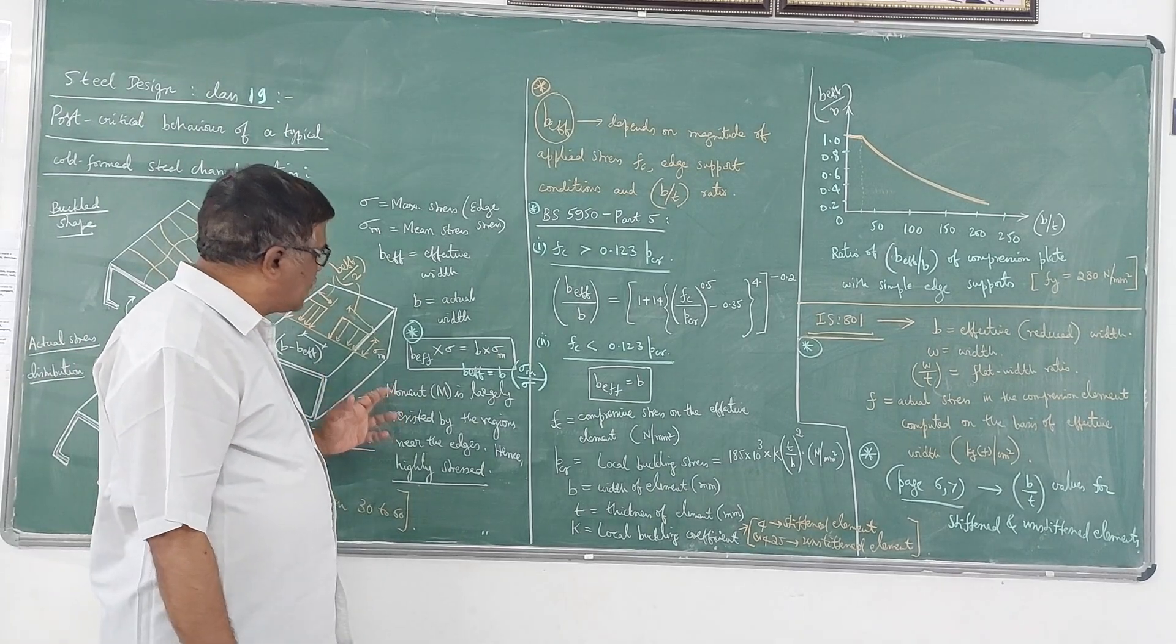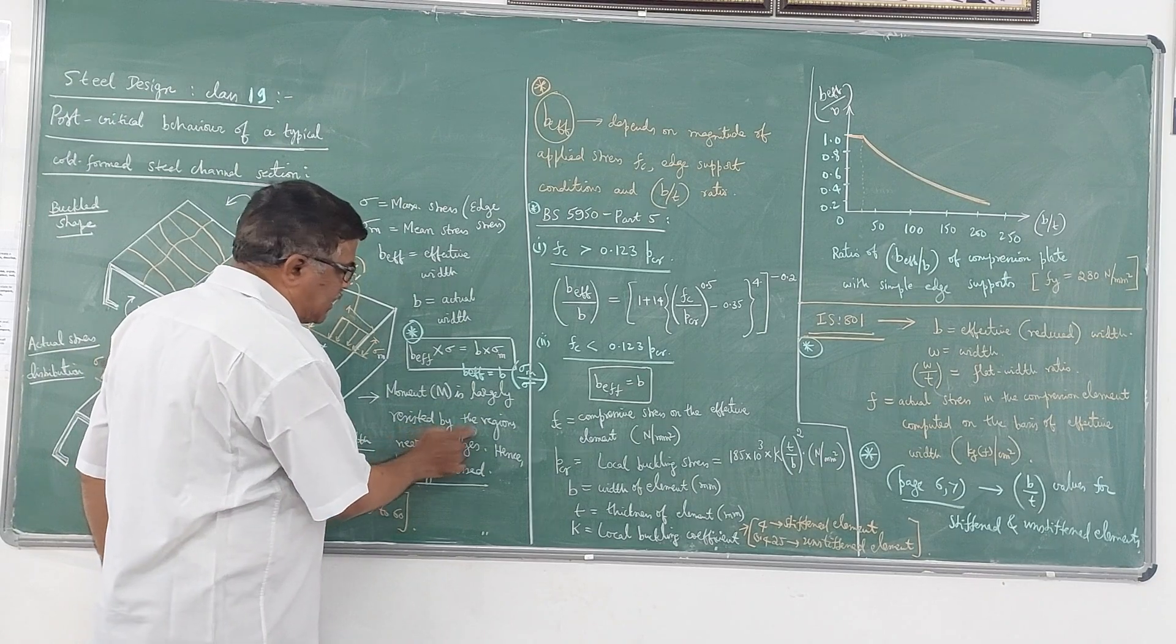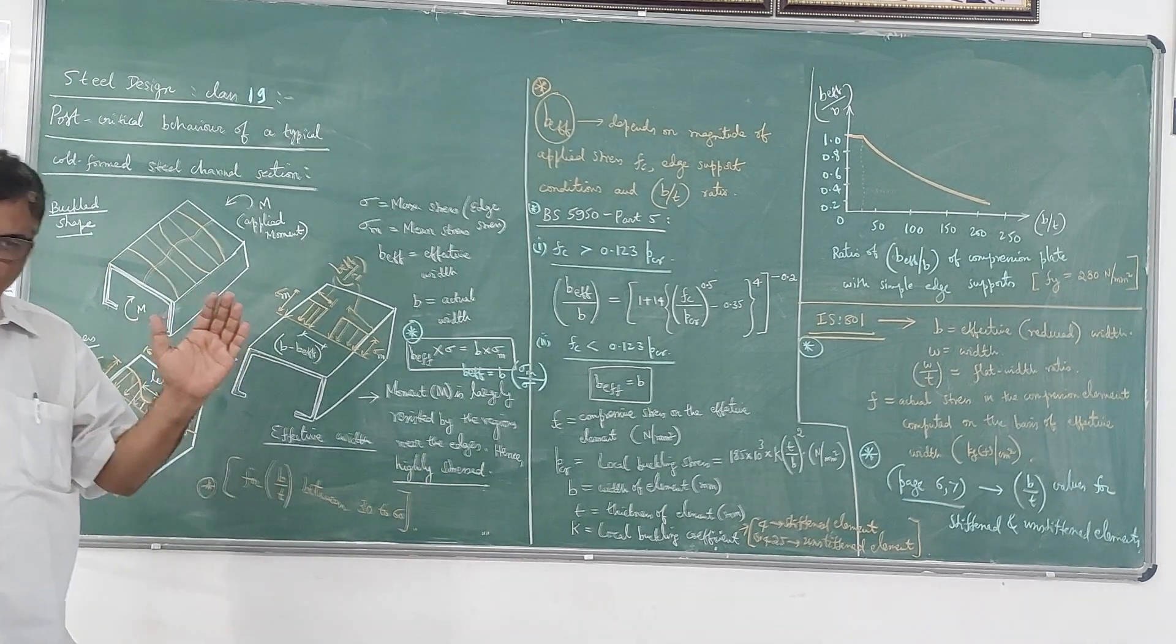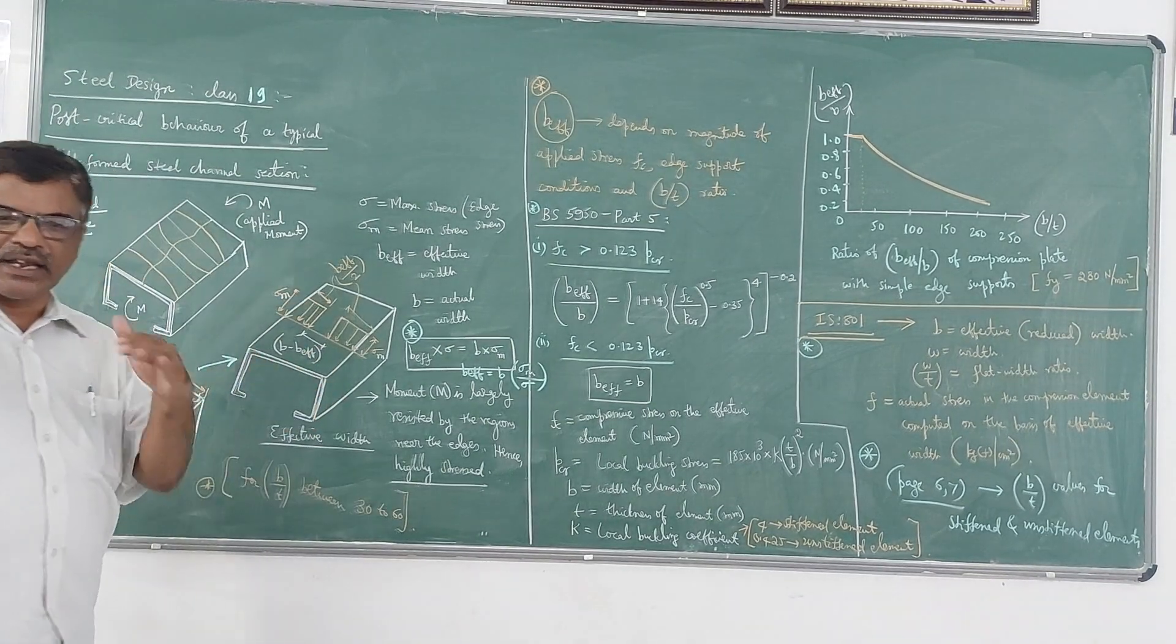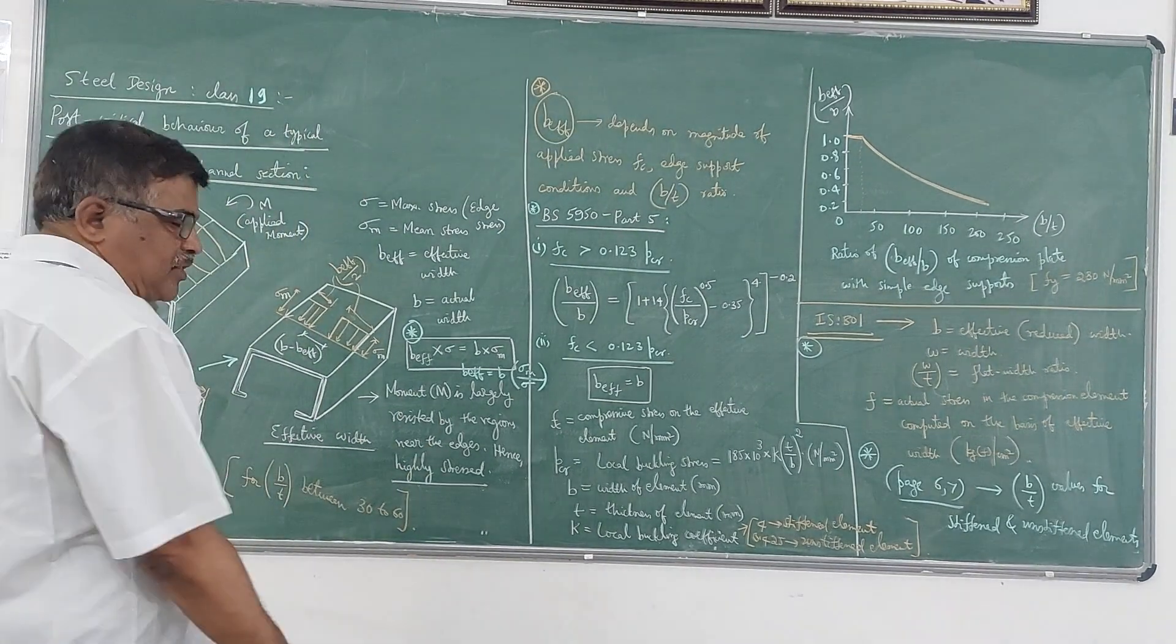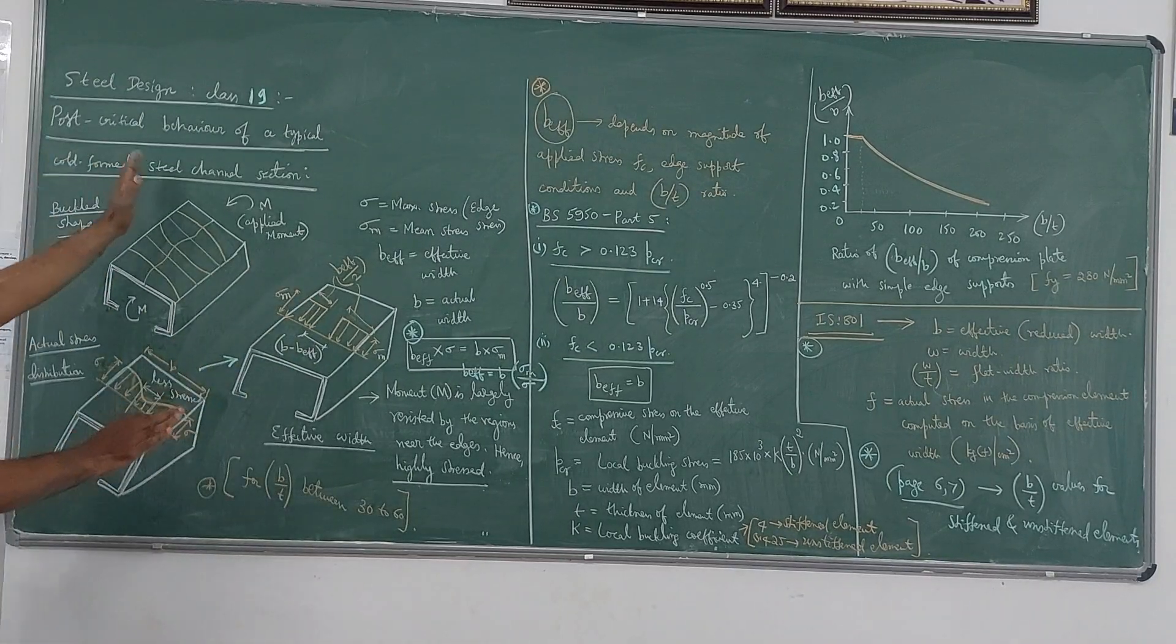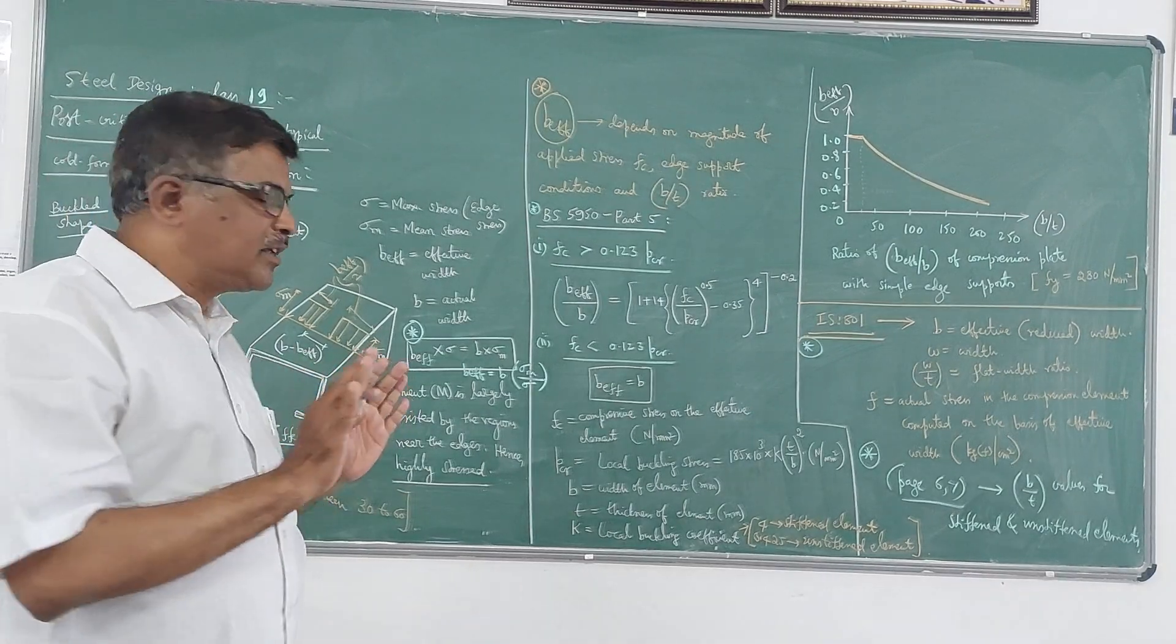That means here what you can say is this moment M is largely resisted by the regions near the edges. So near the edges it is largely resisted, hence it is highly stressed. Whereas when you move towards the center or when you move away from the edges it will be less stressed. Just like your Saint-Venant's principle in strength of materials - the effect of the concentrated force diminishes when you move away from the point of application of the force. So like that, this is the behavior, post-critical behavior of a typical channel section when it is cold-form.